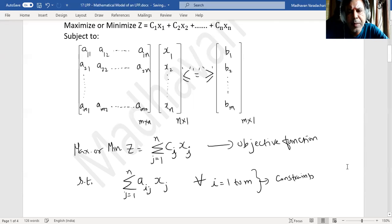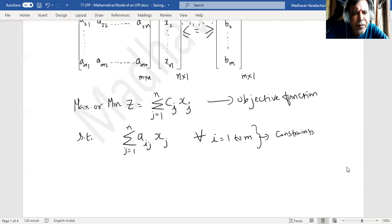And of course, the decision variables cannot take any negative values, which means our xjs are all non-negative for all j equal to 1 to n. This will be the general mathematical model of a linear programming problem.